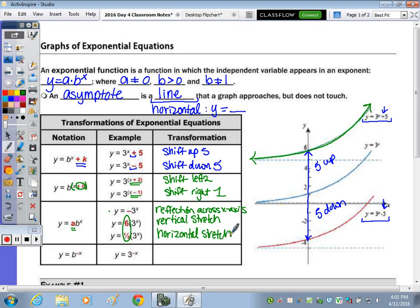And then next, when we actually change not the a value up front but change the exponent from a negative to a positive, that's going to reflect it over the y-axis.